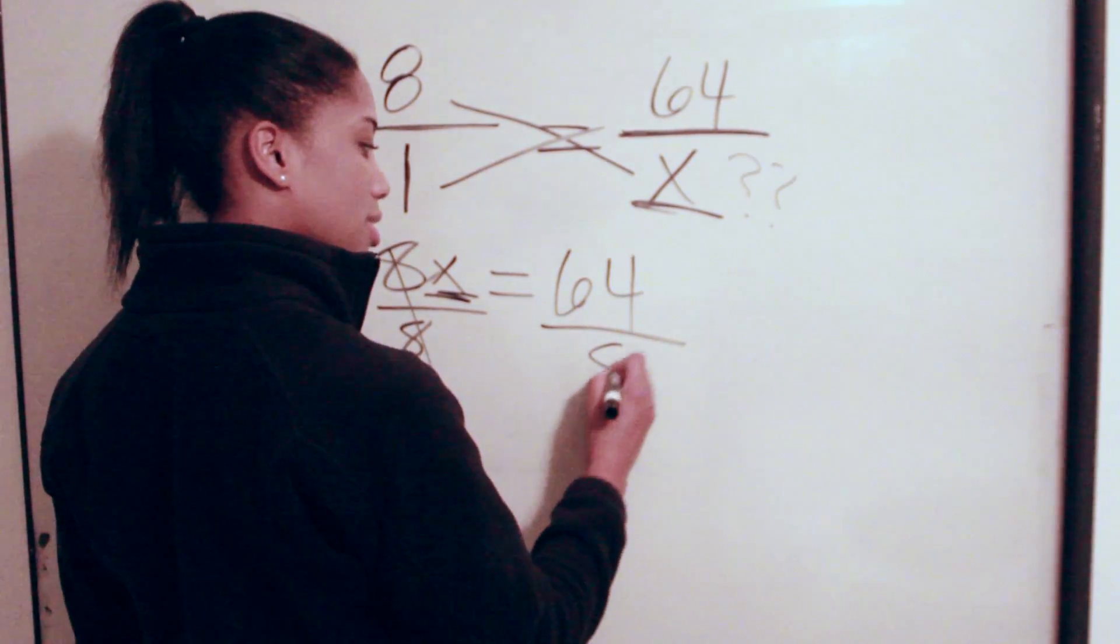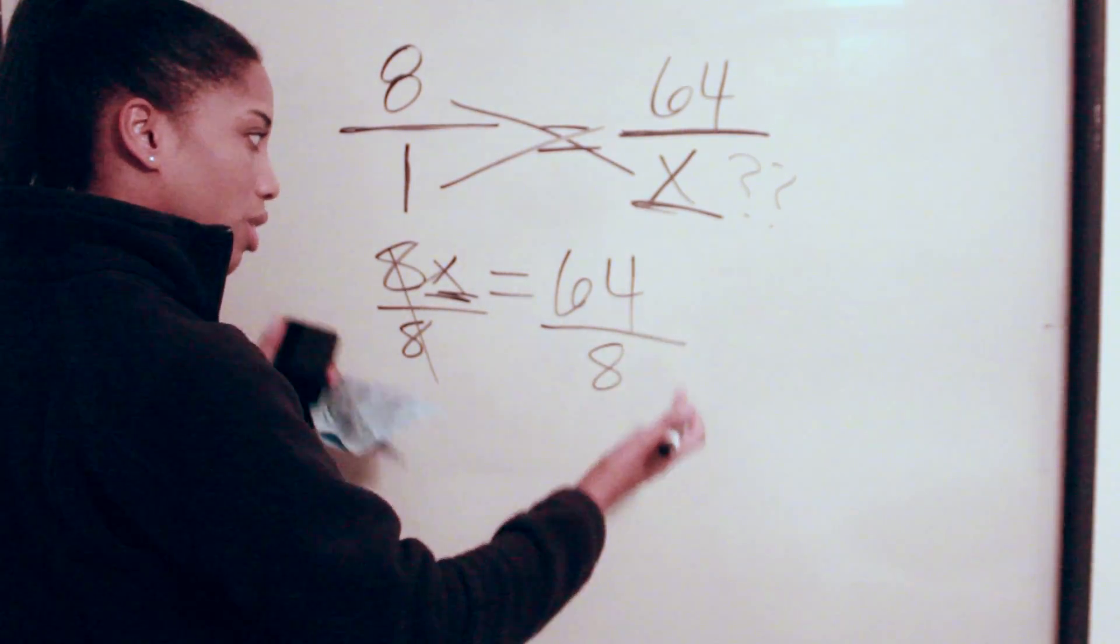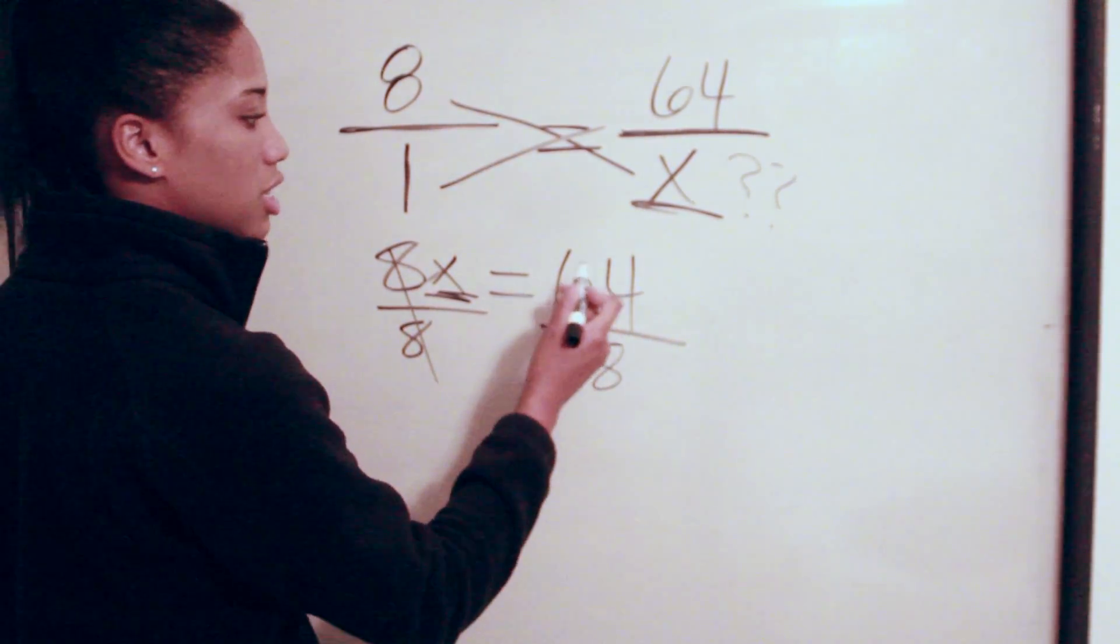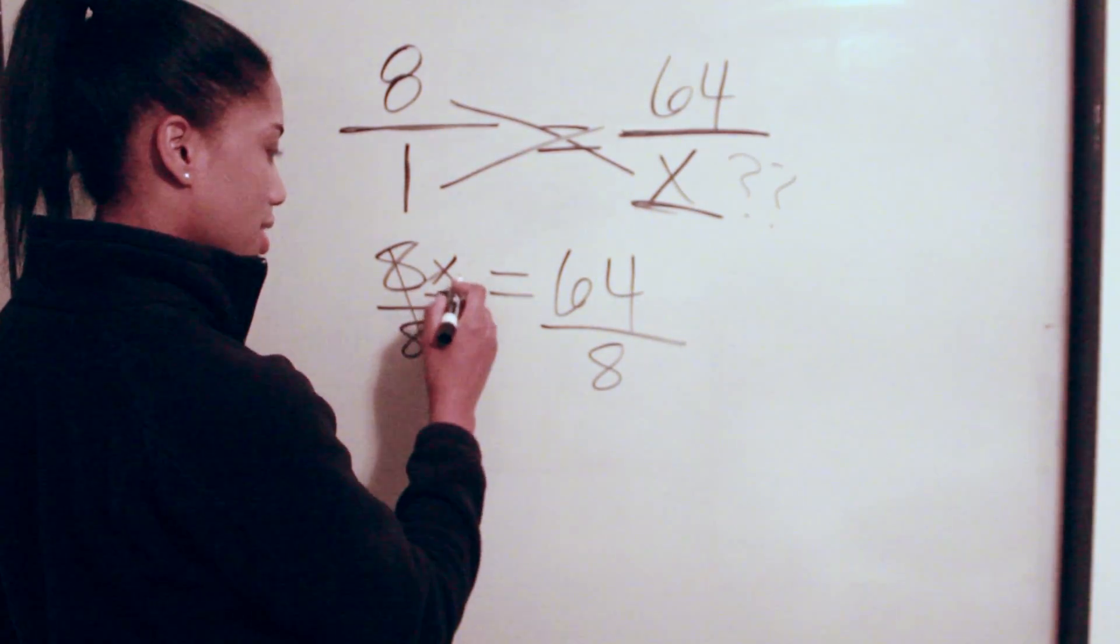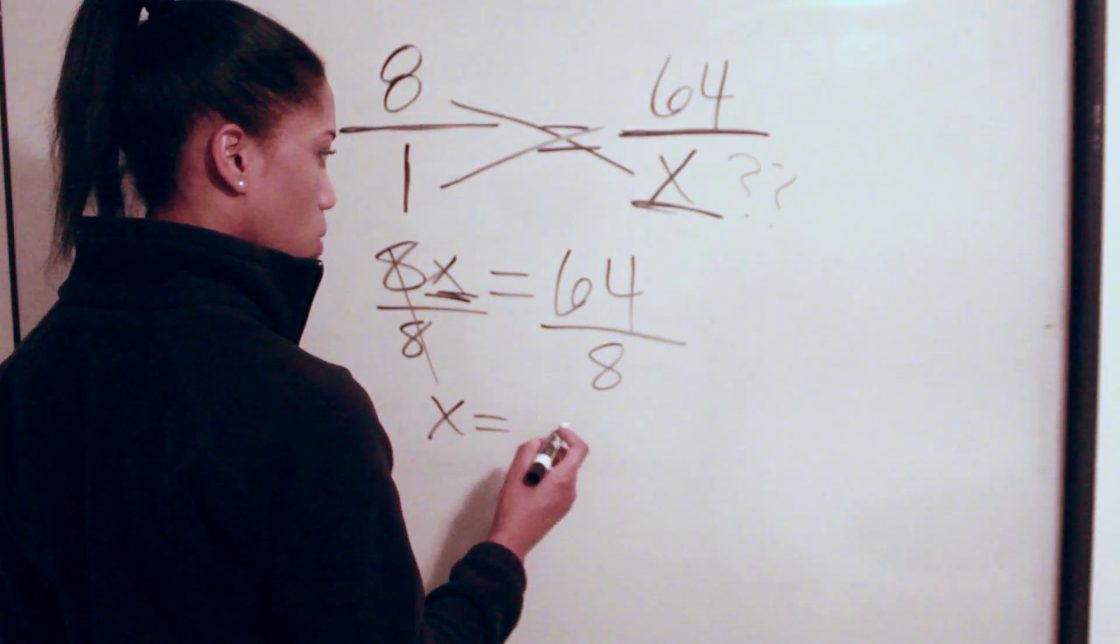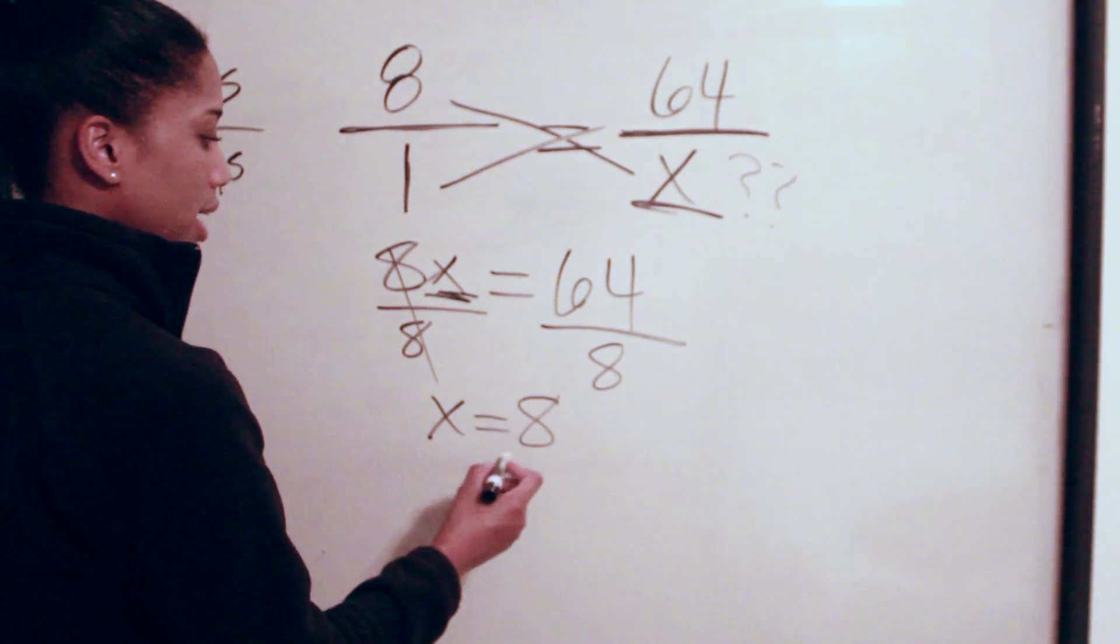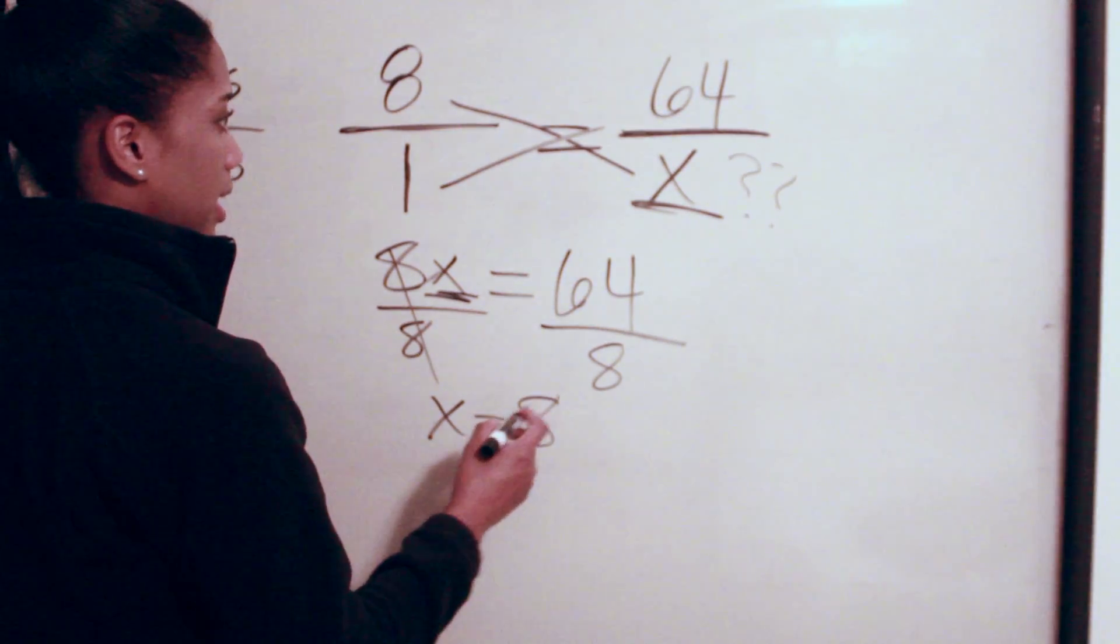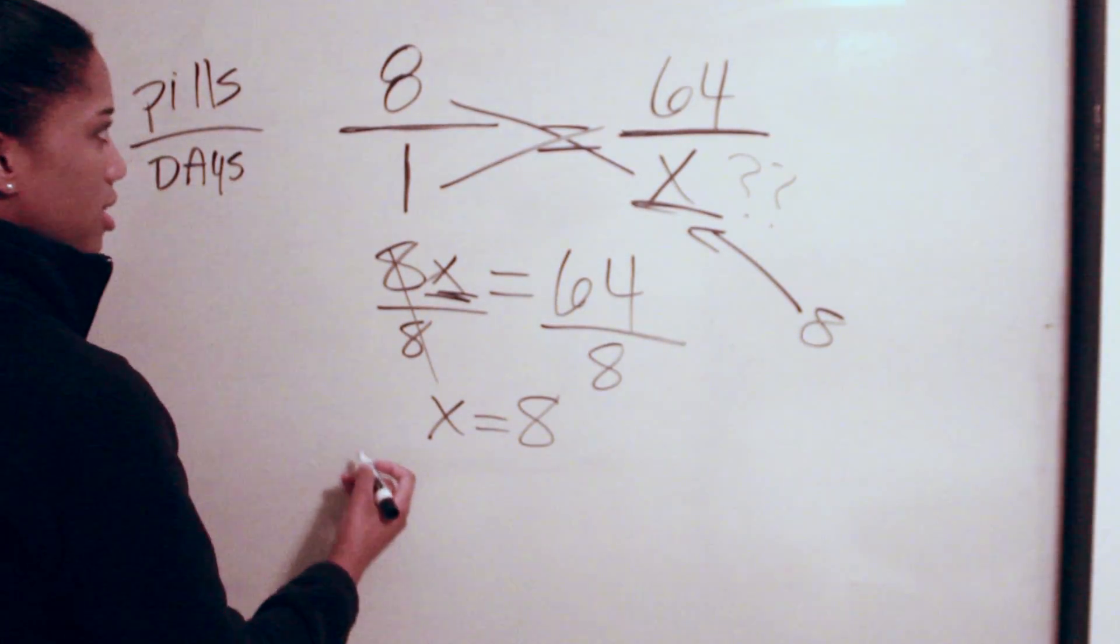We have 64. You have to do the same thing that you did here to this side as well, so it's balanced out. 64 divided by eight would give us X equals 8. So ultimately the answer that goes here will be eight, which is eight days.